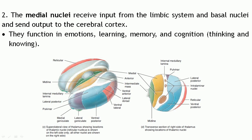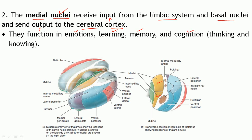The second group is the medial nuclei, which comprise a number of nuclei located medially. These nuclei receive input from the limbic system and the basal nuclei, and send output to the cerebral cortex. Their role is in mediating emotions, learning, memory, and cognition — that is, thinking and acquiring new knowledge.